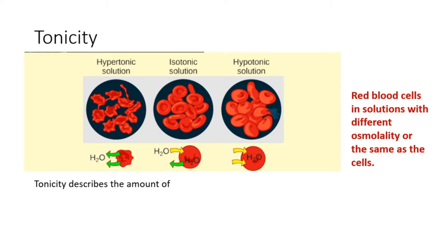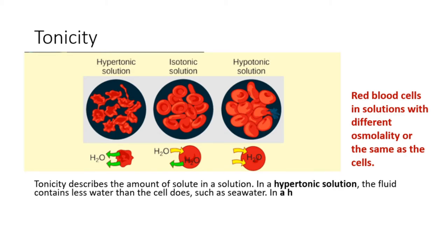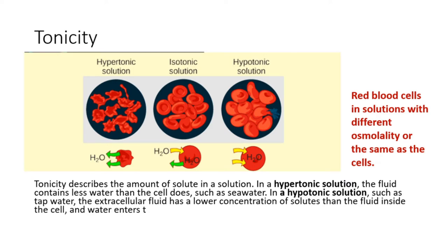Tonicity describes the amount of solute in a solution. In a hypertonic solution, the fluid contains less water than the cell does, such as seawater. In a hypotonic solution, such as tap water, the extracellular fluid has a lower concentration of solutes than the fluid inside the cell, and water enters the cell. In an isotonic solution, the extracellular fluid has the same osmolarity as the cell.